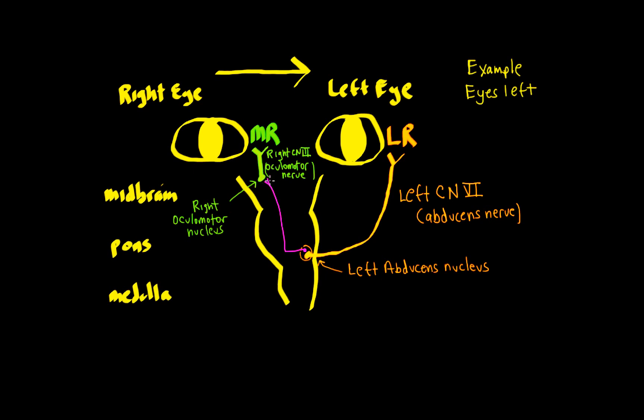And then travel up the brain stem white matter and talk to the contralateral oculomotor nucleus. And that structure is, in this case, the right medial longitudinal fasciculus or the right MLF.